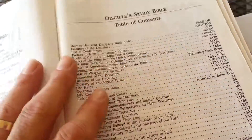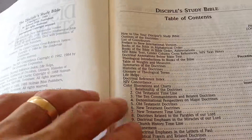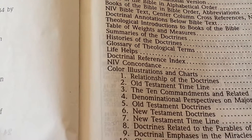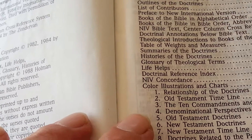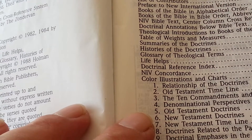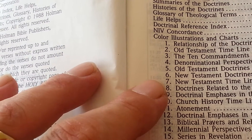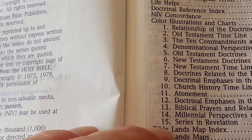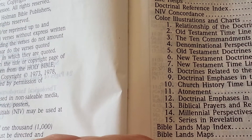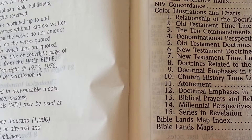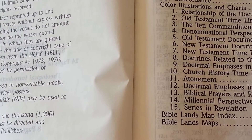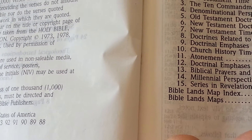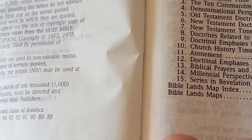Now let me get into the Table of Contents and how to use your Disciples Study Bible. It includes the Outlines of Doctrine, List of Contributors, Preface to the New International Version, Books of the Bible in Alphabetical Order and by Abbreviation, NIV Bible texts, Cross References, NIV Text Notes, Doctrinal Annotations, Theological Introductions, Summaries of Bible Weights and Measures, History of Doctrinal Helps, Glossary of Theological Terms, Life Helps, Doctrinal Reference Indexes, Colored Charts and Illustrations, and Maps.